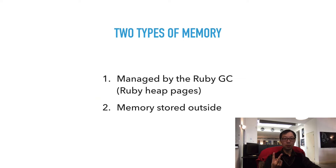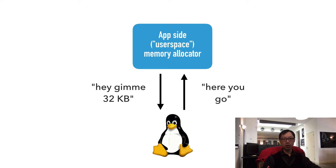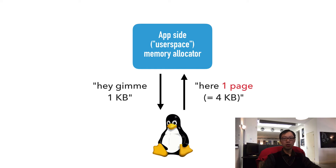So there are roughly two types of memory in a Ruby process. The first is memory managed by the Ruby garbage collector — that is, the Ruby heap pages and their slots. The second is memory stored outside of Ruby heap pages. Now, there are actually two parts involved in the memory allocator that work very differently: one is the application side called user space, and the other is the operating system kernel. The memory allocator is a library in user space and calls a kernel API to actually allocate memory. The kernel can only allocate memory in blocks of 4KB, and such a block is called a page — not to be confused with a Ruby heap page. For clarity, I will use the term OS page.